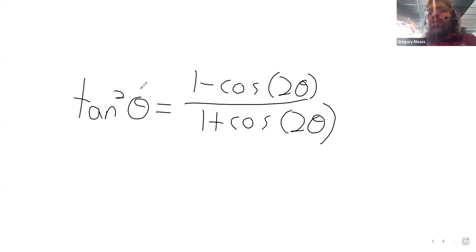And those are the reduction identities, or they're just called the reduction identities. And what they let us do is, even if we have a power other than 2, as long as it's an even power, we can use these identities to simplify it.